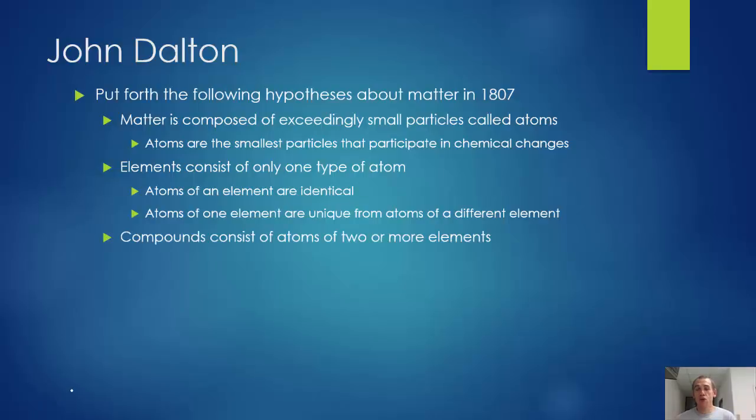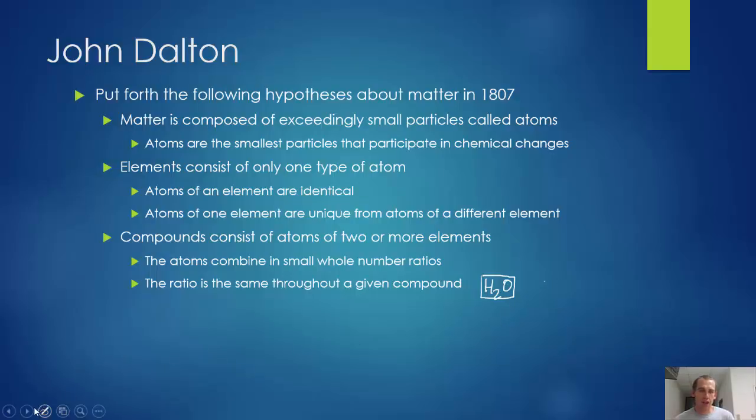Compounds consist of atoms of two or more elements. So if we're going to create something that's not an element, we can do it by bonding different atoms together. But when they bond, they always combine in small whole number ratios, which means you can't bond half an atom. The ratio is the same throughout a given compound. What this means is if you take water, which is H2O, every single molecule has this ratio: two hydrogens to one oxygen. You're never going to find something that has a ratio of like three hydrogens to an oxygen.